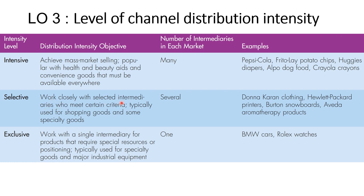Selective distribution intensity is where the company works closely with selected intermediaries who meet certain criteria. It is typically used for shopping goods and some specialty goods, engaging several intermediaries — not too many, but not available everywhere either — because they want to ensure sellers meet specific criteria, especially regarding the brand image of that particular product.